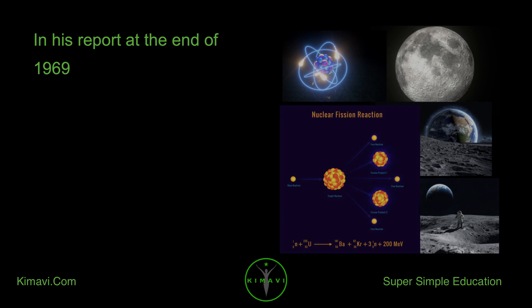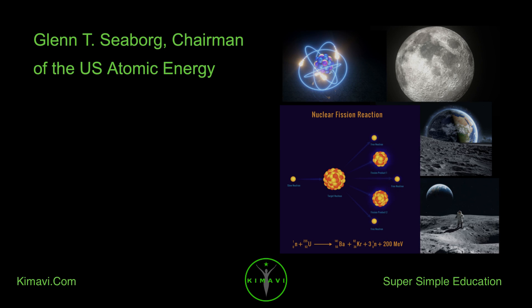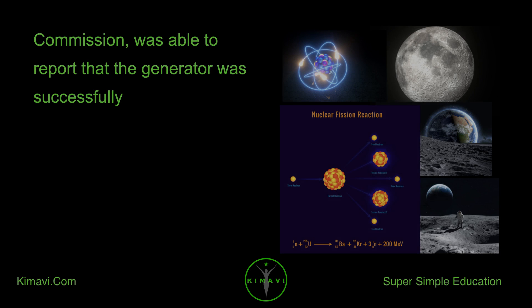In his report at the end of 1969, Glenn T. Seaborg, chairman of the U.S. Atomic Energy Commission, was able to report that the generator was successfully operating.